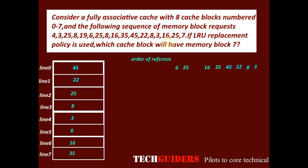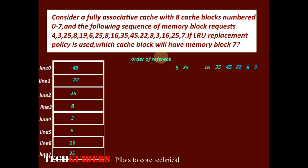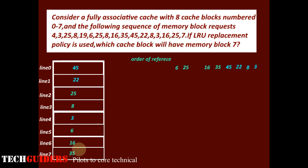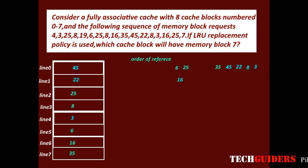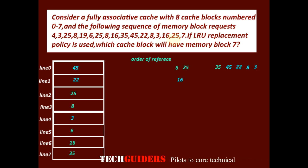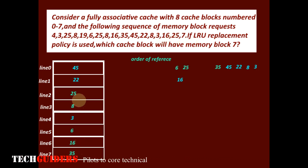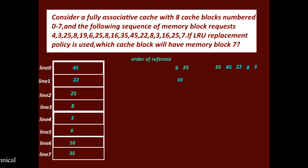After block 3, there is a request for block 16. Block 16 is already residing in the cache — a cache hit — and 16 moves to the front of the order of reference. Next is block 25, which is also already in the cache. That is a cache hit, and 25 moves to the front of the order of reference.